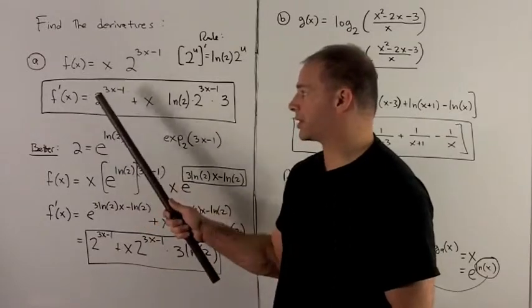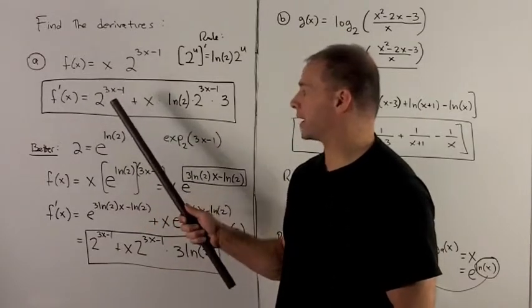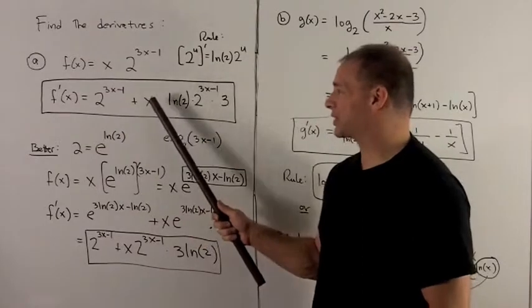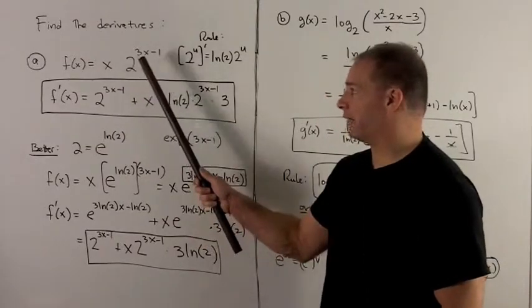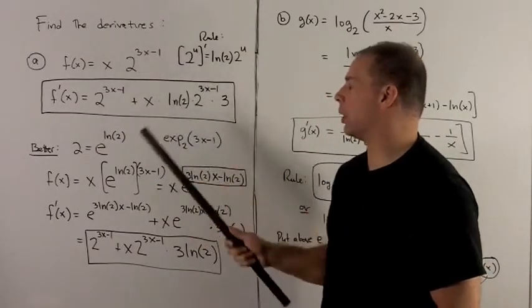We're going to have derivative of x is 1, I write in my second term, plus x, and then I have to take the derivative of 2 to the 3x minus 1.